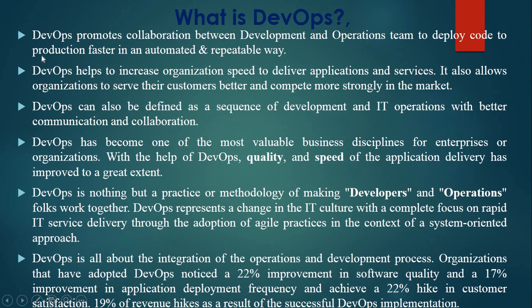DevOps promotes collaboration between the deployment and operation team to deploy code to production faster in an automated and repeatable way. DevOps helps to increase organizational speed to deliver applications and services. It also allows organizations to serve their customers better and compete more strongly in the market. DevOps has become one of the most valuable business disciplines for enterprises and organizations. With the help of DevOps, the quality and speed of application delivery has improved to a great extent.